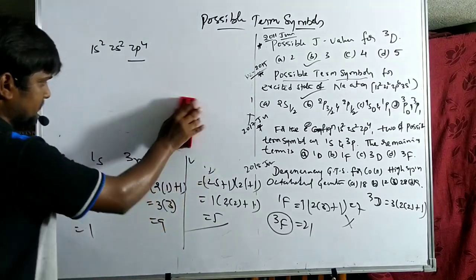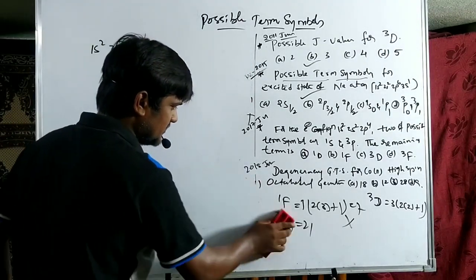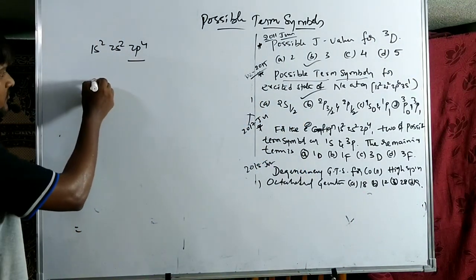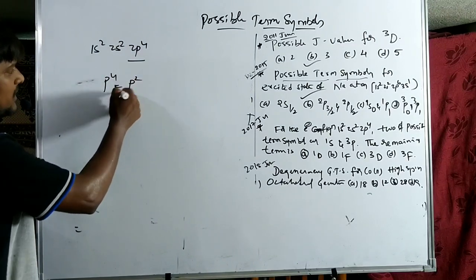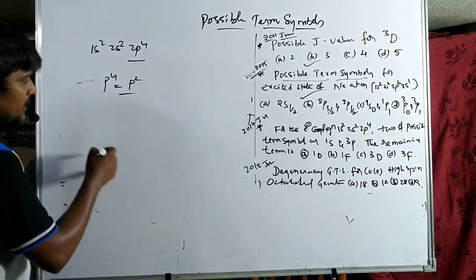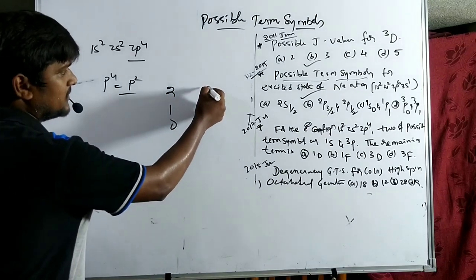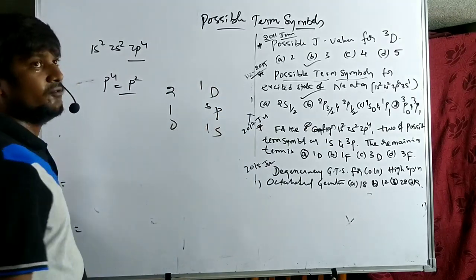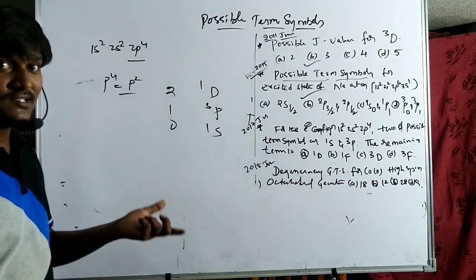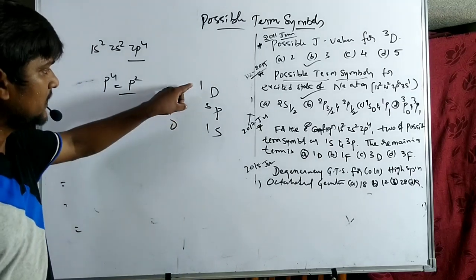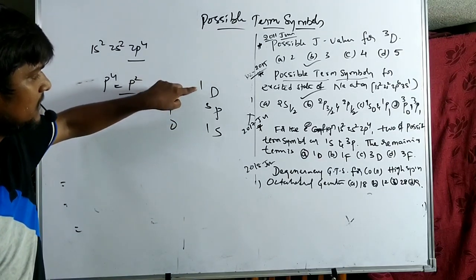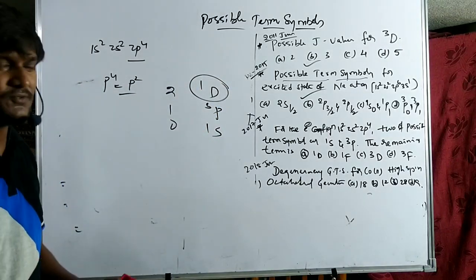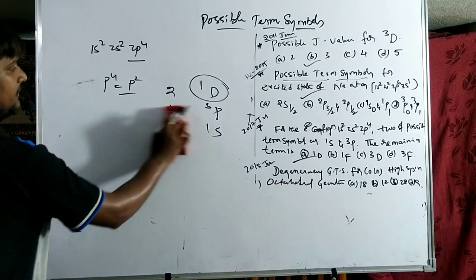The second method confirms: since p⁴ = p², the possible terms are ¹D, ³P, ¹S (same as p² configuration). With ¹S and ³P already given, the remaining term is ¹D. Both methods give the same answer: option A, ¹D.